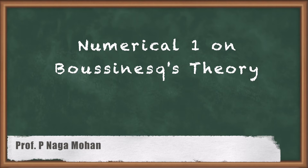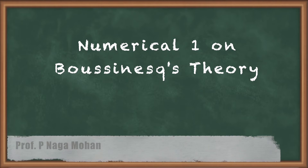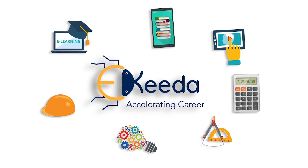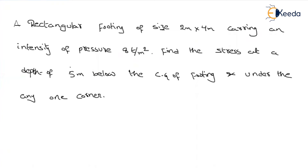Hello friends. Let us solve a problem based on Boussinesq theory. First, understand the given problem. A rectangular footing of size 2m by 4m carries an intensity of pressure of 8 tons per m². Find the stress at a depth of 5m below the CG of the footing and also under any one corner.